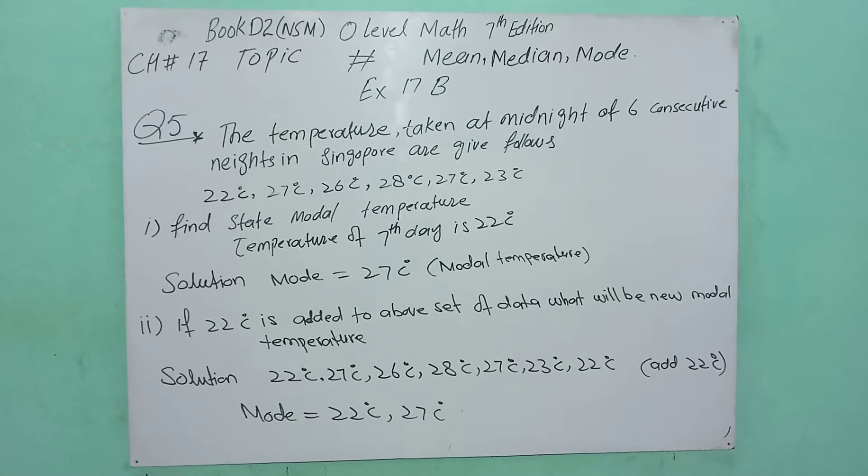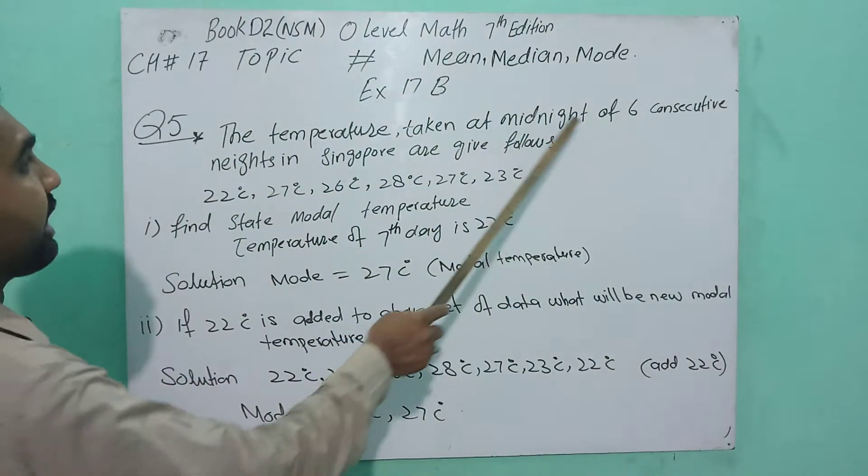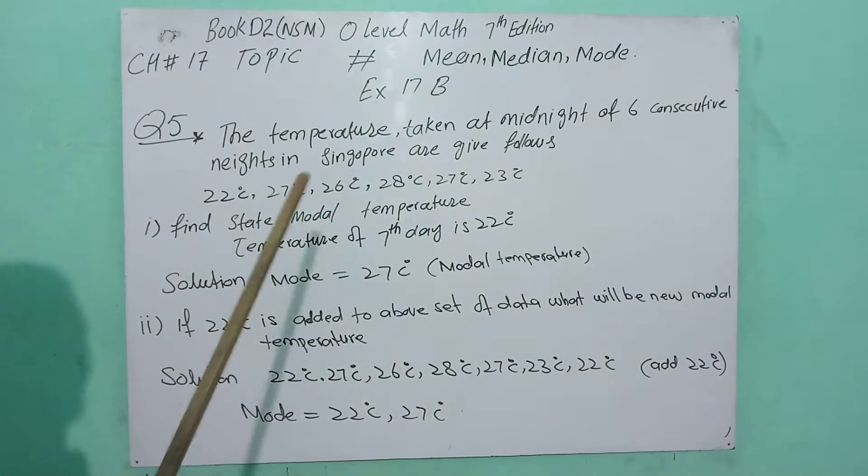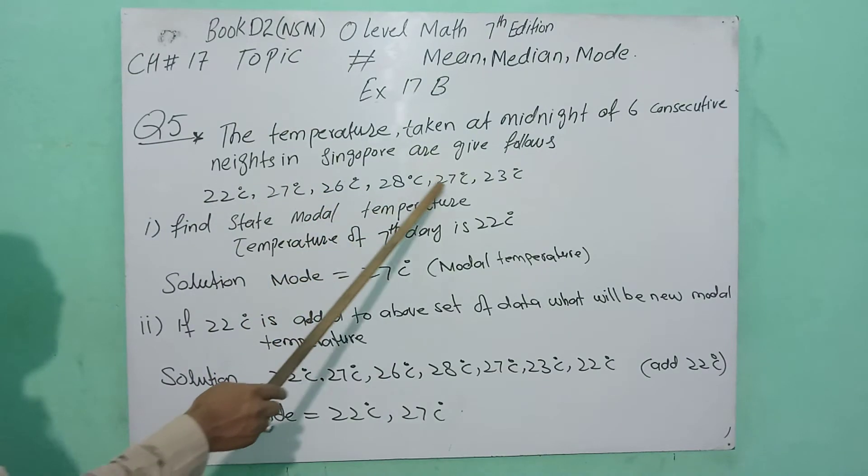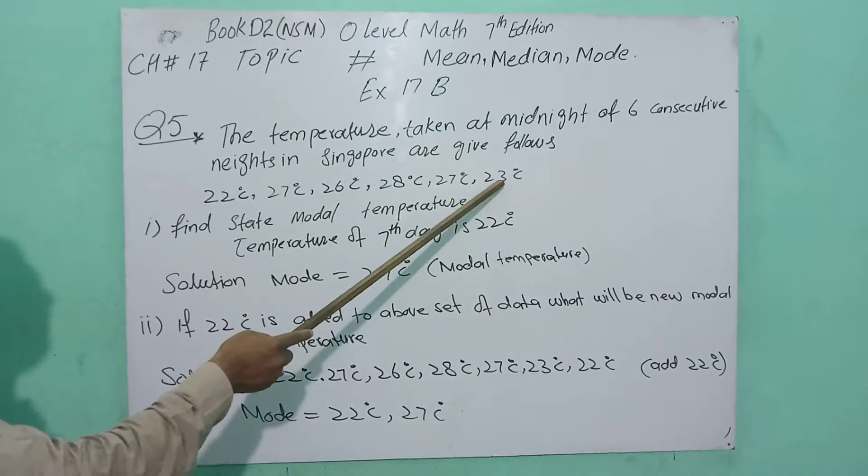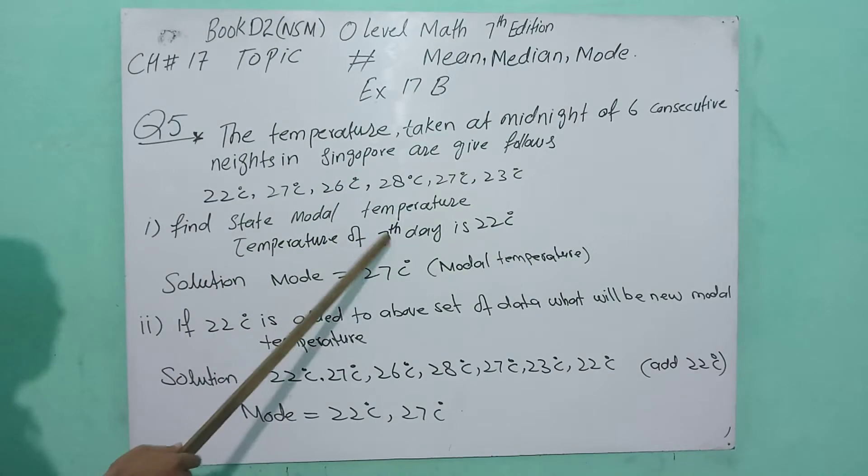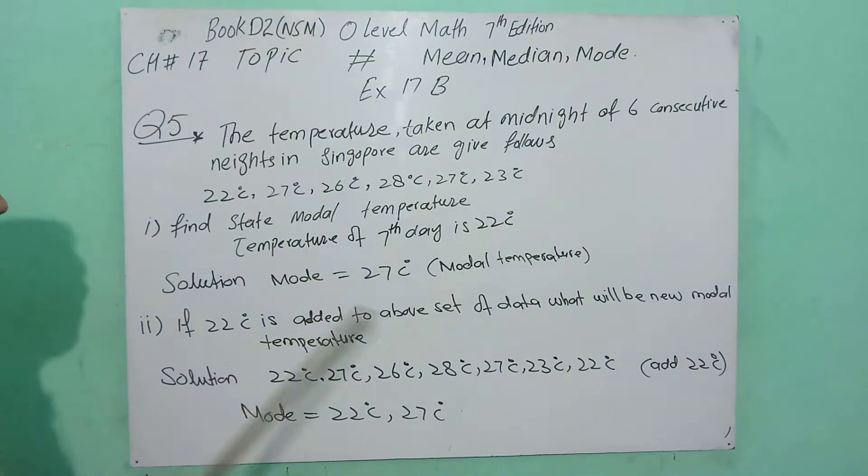The temperature taken at midnight of six consecutive nights in Singapore are given. Consecutive nights mean every day: 22, 27, 26, 28, 27, 23. This means Saturday, Sunday, Monday and so on. Find the modal temperature if the temperature of a seventh day is 22. If we add Saturday, the solution is: 27 is the modal temperature because 27 appears two times.